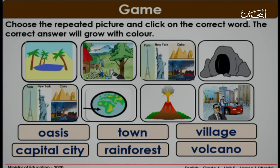Now let's play a game. In this game, you have to choose the repeated picture and then click on the correct word. The correct answer will grow with color.